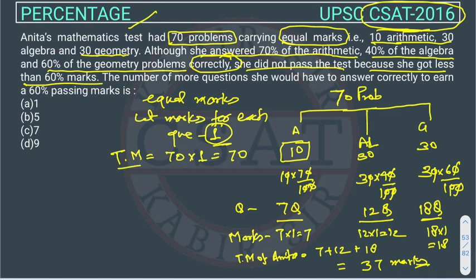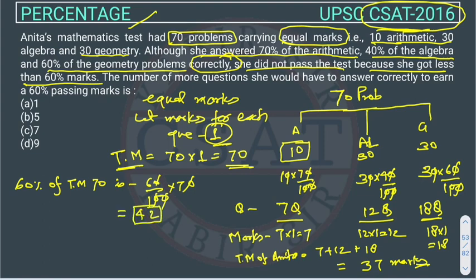And the maximum marks or the total marks in the exam is 70. So she didn't get the 60% marks. So the 60% of total marks is 60/100 × 70. This 0 will cancel this 0. This 0 will cancel this 0. So 42. So the 60% marks is 42.